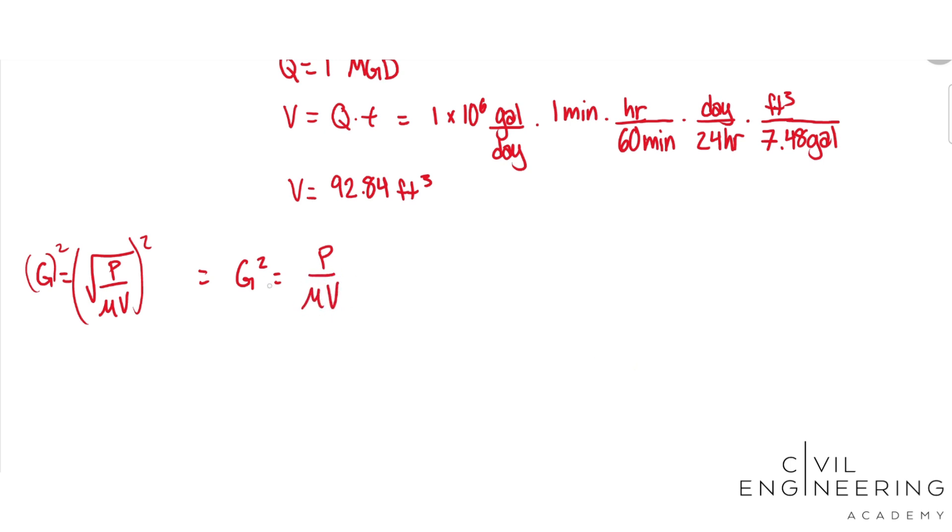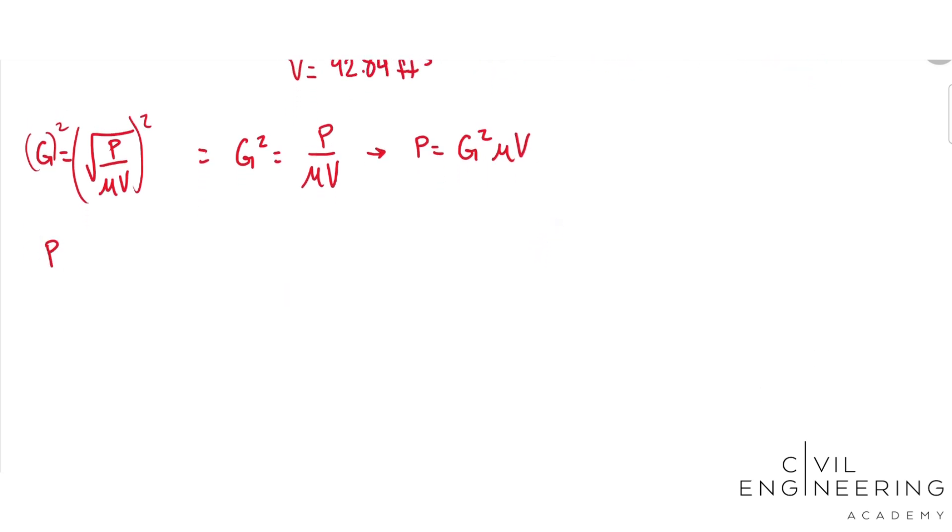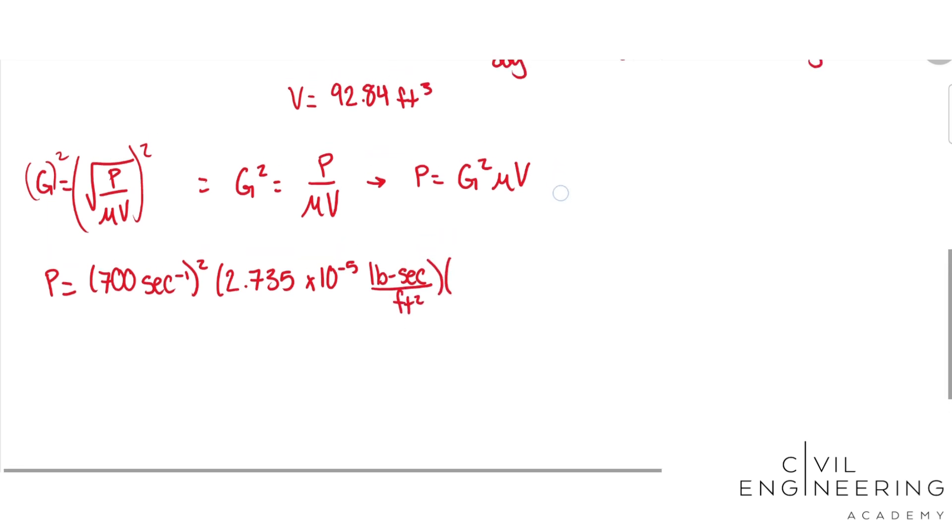And then we can plug all of our information right into this equation. So we got 700 sec to the negative 1 squared times our 2.735 times 10 to the negative 5 pound sec per foot squared, and then our V was 92.84 feet cubed.